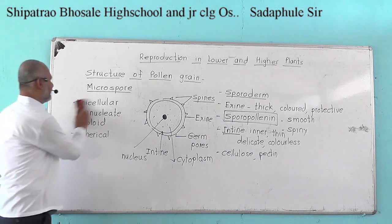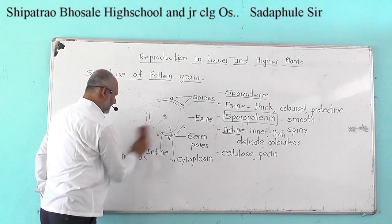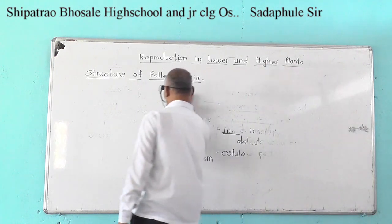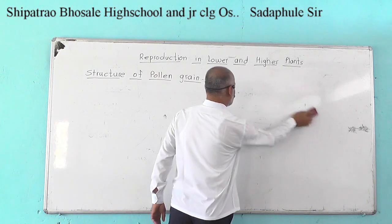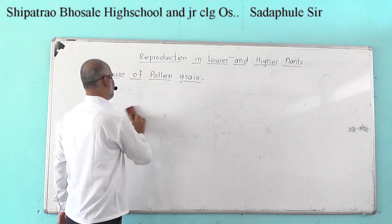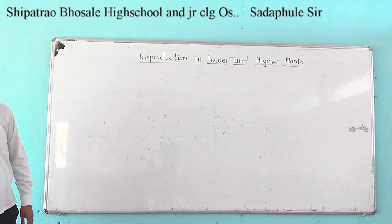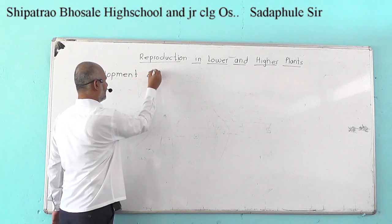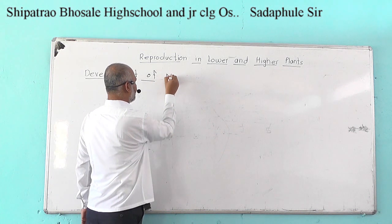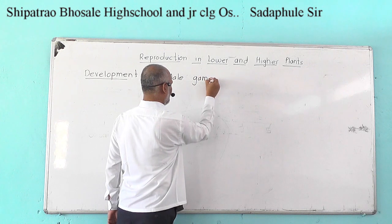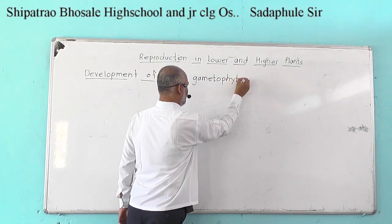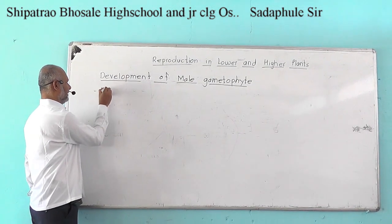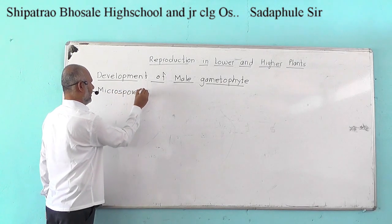The function of pollen grain is to form the male gametophyte containing male gametes. During sexual reproduction in angiosperms, the male gametophyte is formed from the pollen grain or microspore. Now we have to study the development of male gametophyte. The male gametophyte develops from the microspore or pollen grain.